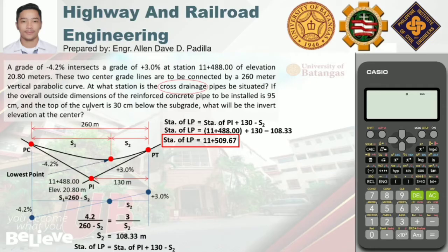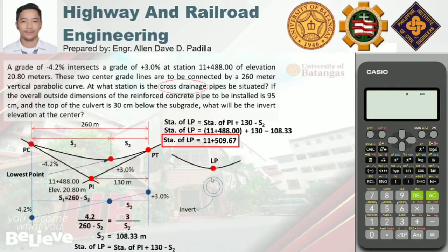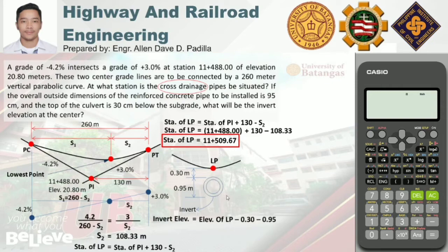For the second part — the invert elevation — we magnify the lowest point. Directly below it is the cross drainage pipe or culvert made of reinforced concrete. The invert refers to the bottom-most part of the culvert. The outside diameter is 95 centimeters or 0.95 meters, and the vertical distance between the subgrade at the lowest point and the top of the culvert is 30 centimeters or 0.3 meters. Therefore, the invert elevation equals the elevation of the lowest point minus 0.3 minus 0.95.